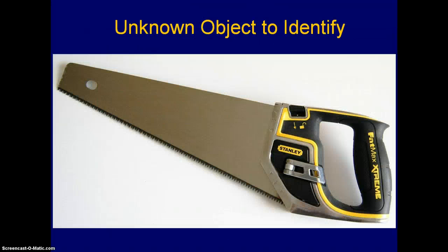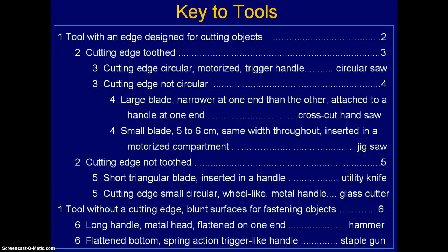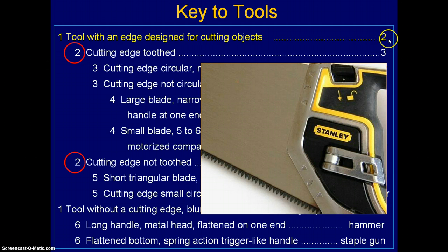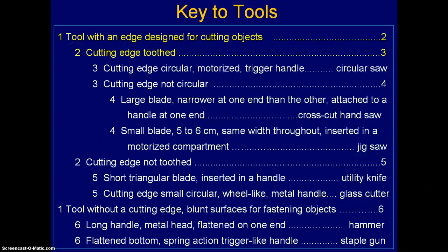Here's the object you found coming in from the stone age — you wonder what kind of tool it is; it looks rather intriguing and you could probably use it. The first question is: is it designed for cutting objects or for fastening objects? Well, you can see these sort of sharp things along the edge, so it looks like it might be for cutting objects. That's your first choice. So you say it's a tool with an edge designed for cutting, and therefore you go to number two. The two choices for number two: is the cutting edge toothed or not toothed? Looking at the cutting edge, you can see these look like teeth, so you choose 'cutting edge toothed.'